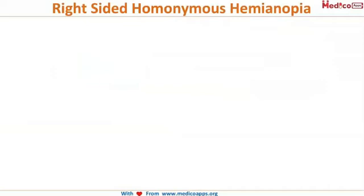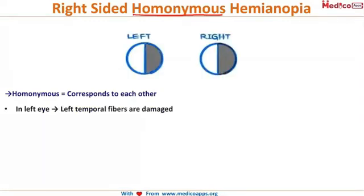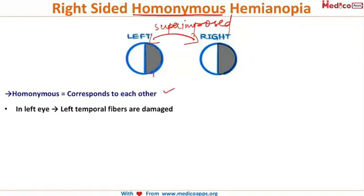Now let's come to a slightly more complicated condition: right-sided homonymous hemianopia. Focus on the word 'homonymous.' Looking at this image, homonymous means both visual field losses can be superimposed on each other — the left eye visual field loss placed on the right eye looks the same. That is the meaning of homonymous: the losses correspond to each other.